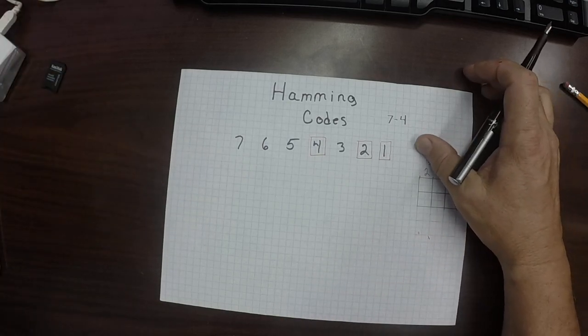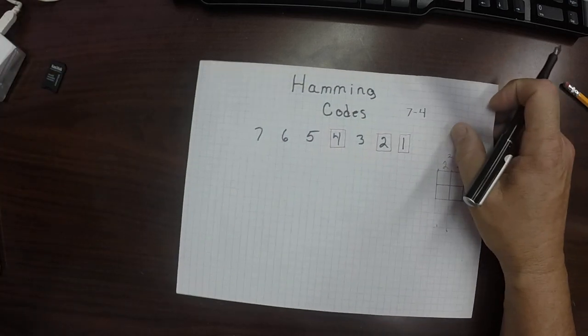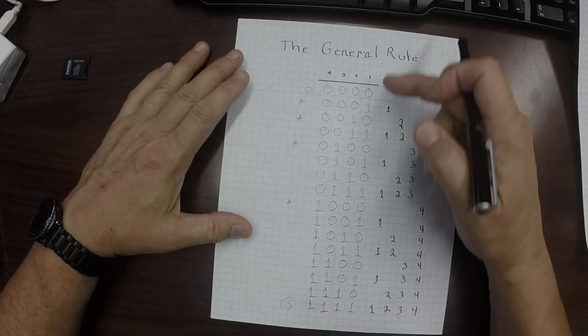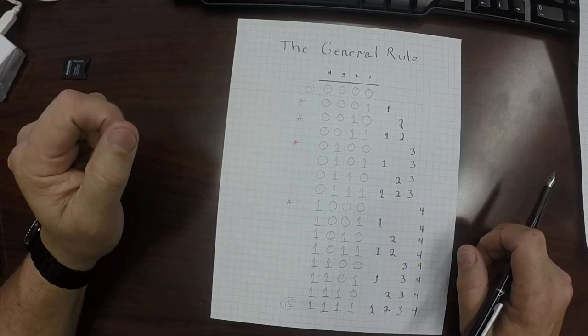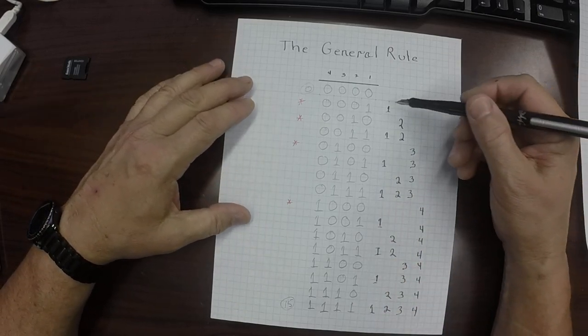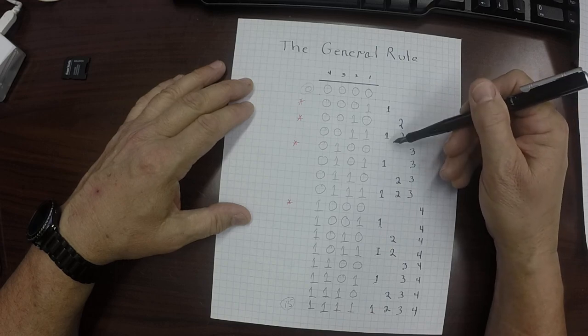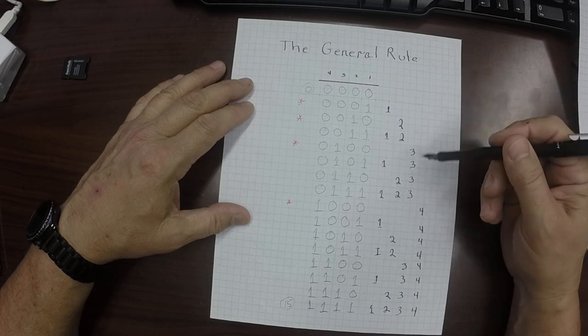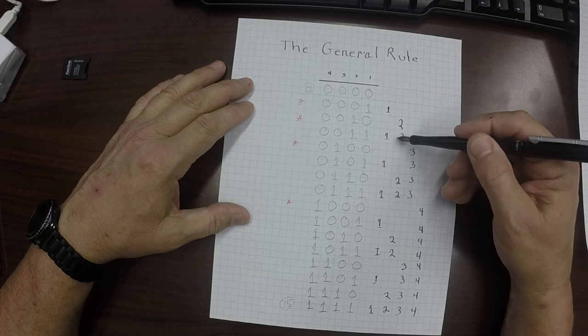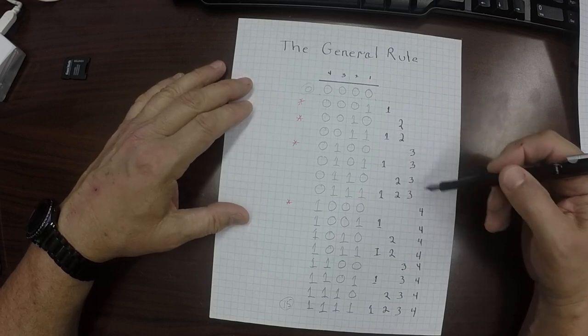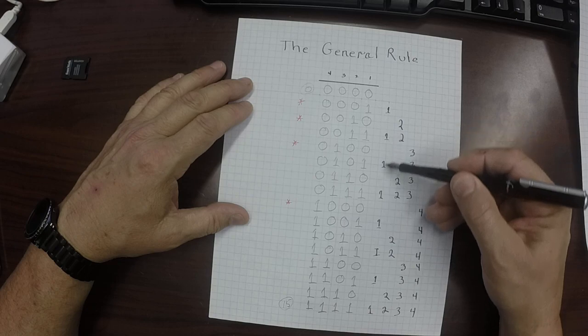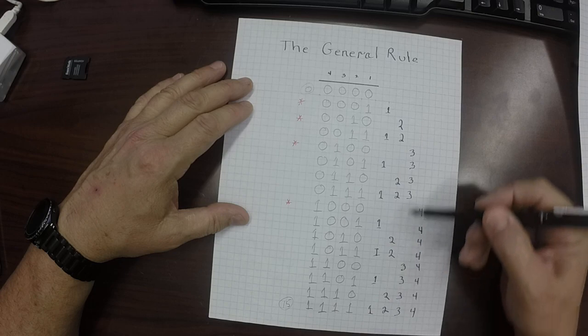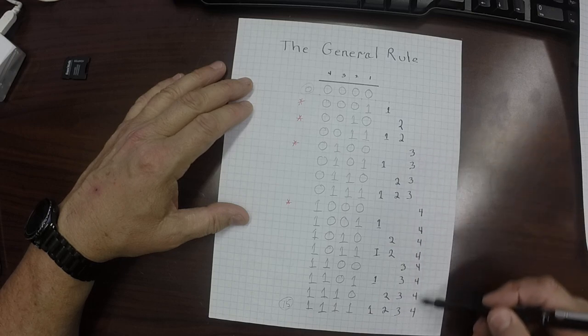Now I'm going to explain the general rule of exactly how this works. Here are the 4-bit sequences here from 0 to 15. When we do the check bits, the first bit, the 1 bit, checks any odd number: 1, 3, 5, 7. The 2 checks these bits right here. The 3-bit checks these, and the 4-bit checks those.